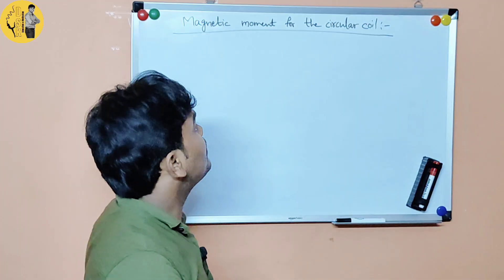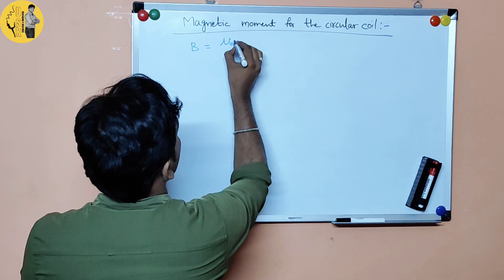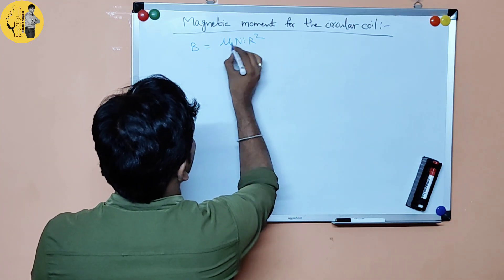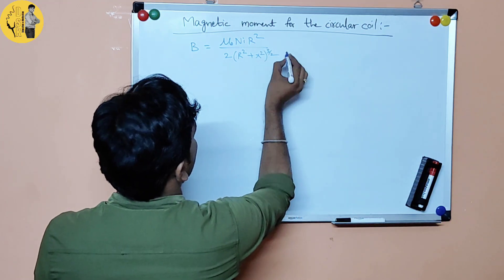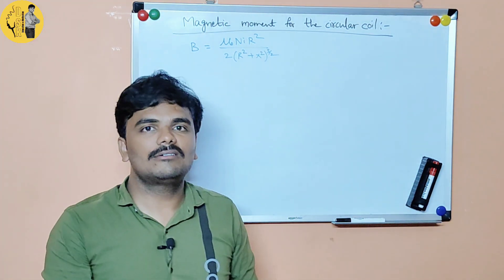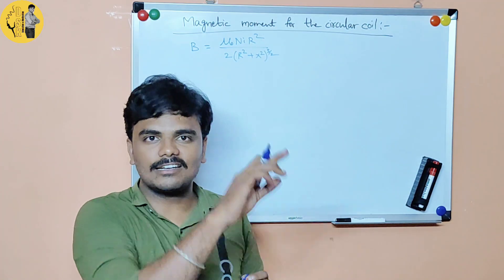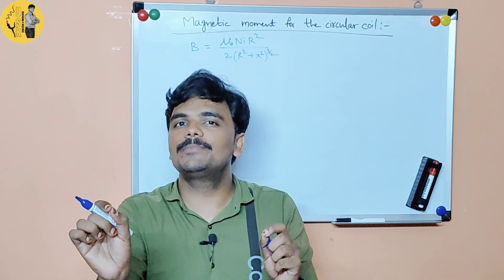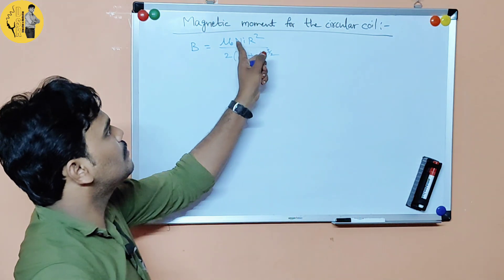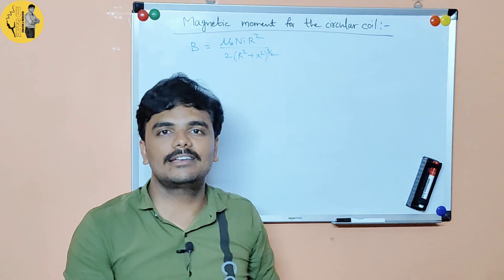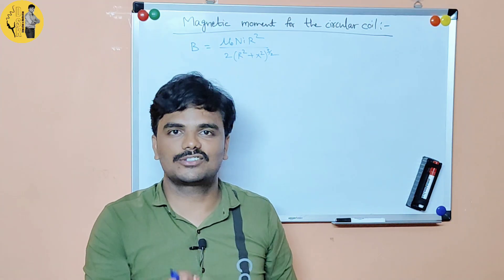We know that the magnetic field on the axial line of a circular coil is: B equals mu naught n i r squared divided by 2 into r squared plus x squared, whole to the power 3 by 2. So the magnetic field on the axial line of a circular coil is given by this expression.